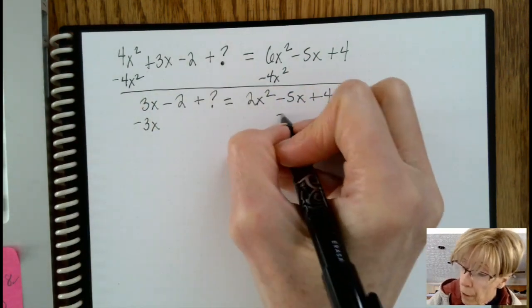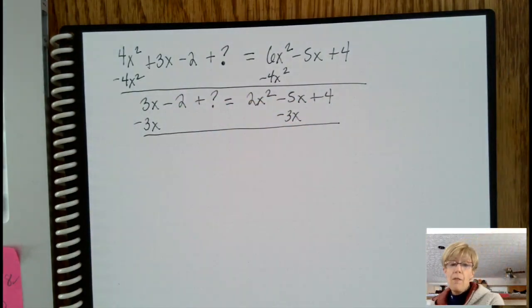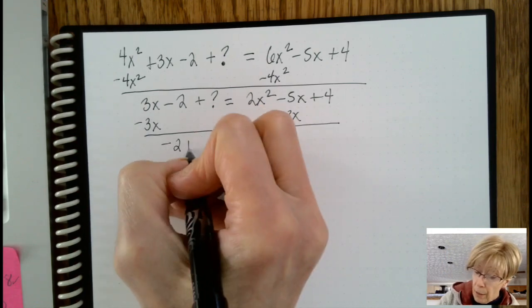We want to figure out what question mark is, so let's add 2 to both sides, and we get question mark equals 2x squared minus 8x plus 6.